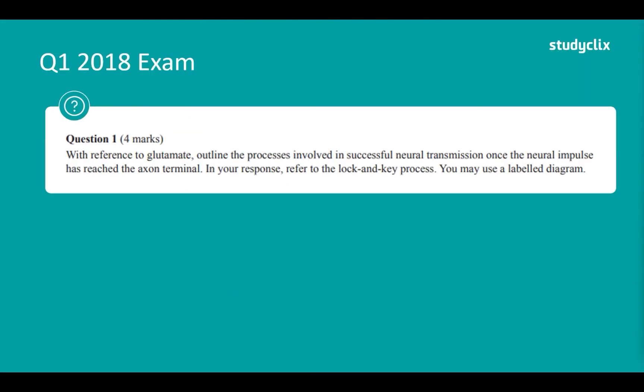Now moving on to an exam question. This is worth four marks: with reference to glutamate, outline the process involved in successful neurotransmission once the neural impulse has reached the axon terminal. In your response refer to the lock and key process. You may use a labelled diagram, however I would stray away from that just because there are a lot of things you need to include to get it right.